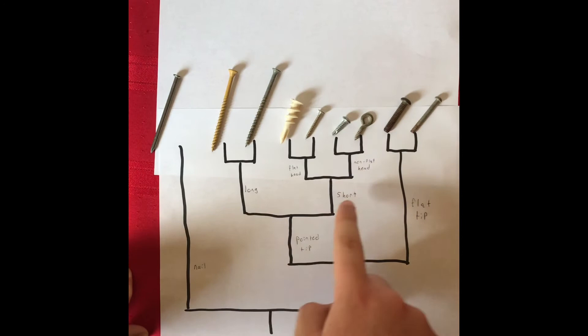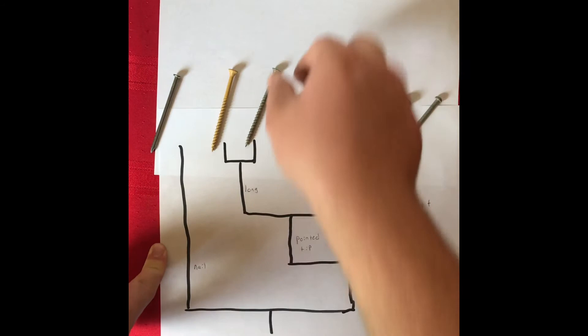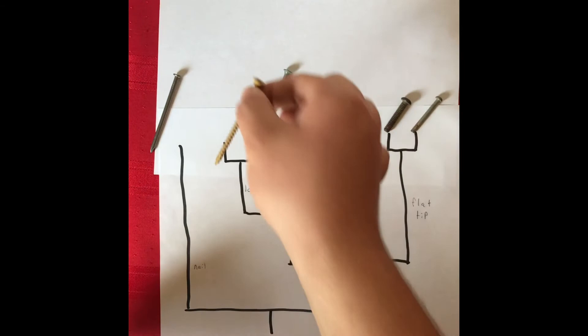The two separate phenotypes at this node are long and short. The long screws also diverged once more into the gray colored and yellow colored OTUs.